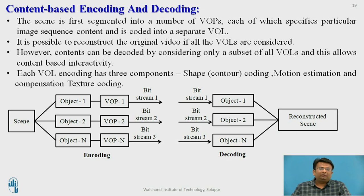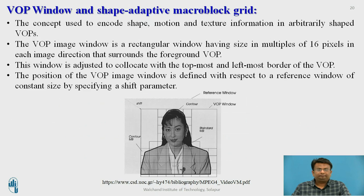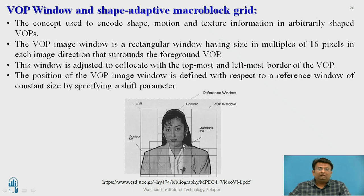Each VOL encoding has three components: shape coding (contour coding), motion estimation, and texture coding. As shown in the figure, the contour macroblock is present at the edge of the object, while the standard macroblock is present inside the object and does not define the edge.